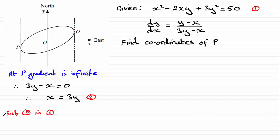And by doing that I'm now going to have x squared, which will now be 3y all squared, minus the 2 times the x, which is 3y, times another y, plus 3y squared, and that's going to equal the 50. We'll just border this off and come down here.